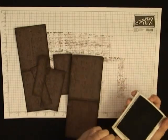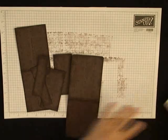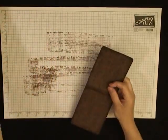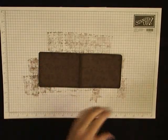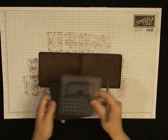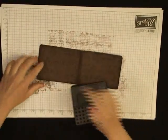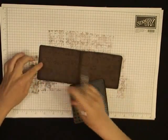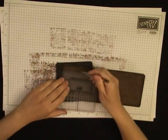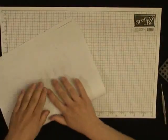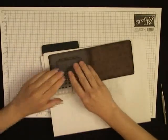Now that I'm done sponging all the edges, set aside the little pieces and we're going to work with the largest piece with the rounded corners. Get out your paper piercing template and mat and your paper piercing tool. We're going to pierce all around all four borders. When you place this down you can't see it because it's chocolate chip card stock on a black surface, so it helps if you get a piece of scratch paper and lay this on top of the black piercing mat so you can see the contrast.